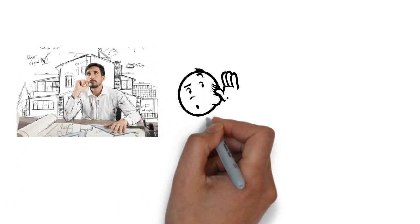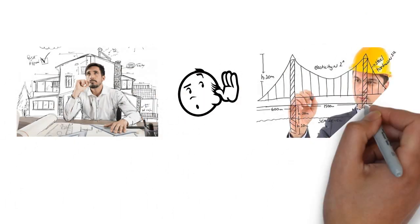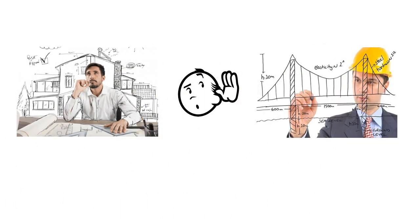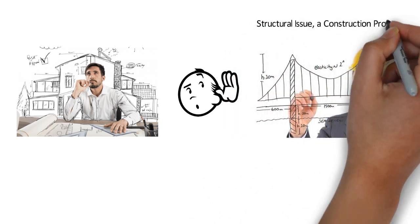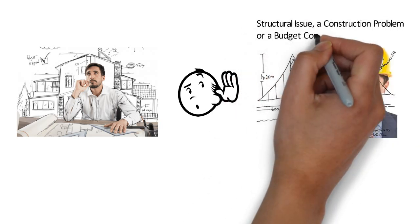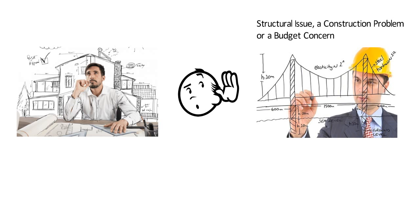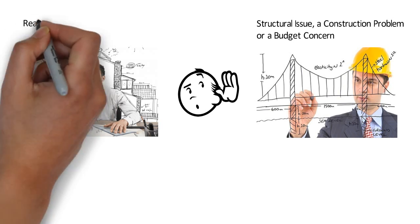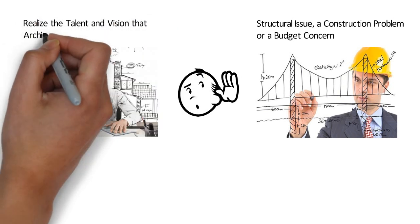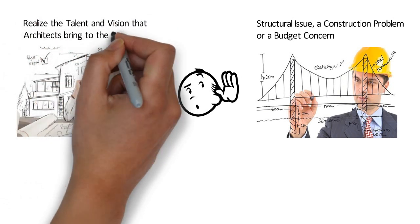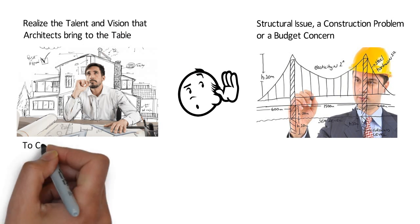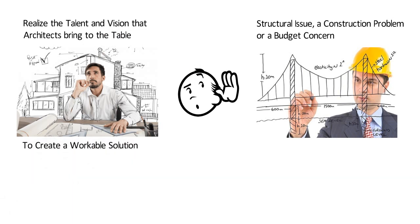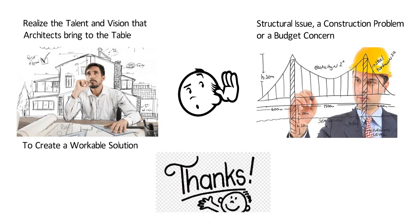Architects must listen when the structural engineer warns against something, whether it be a structural issue, a construction problem or a budget concern. And engineers need to realize the talent and vision that architects bring to the table and use the knowledge they possess to create a workable solution. So friends, see you in the next video. Thanks for watching.